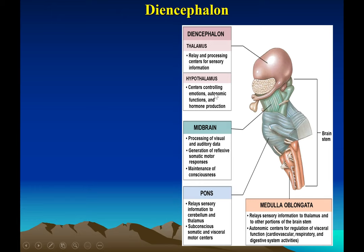The hypothalamus is the seat of homeostasis. It controls emotions, all autonomic functions, and hormone production. You can see the pituitary gland — the master gland of the body — hanging from the hypothalamus. The hypothalamus plays a huge role in hormone production, emotions, temperature homeostasis, hunger drive, thirst drive, and houses the pituitary gland that produces several hormones.